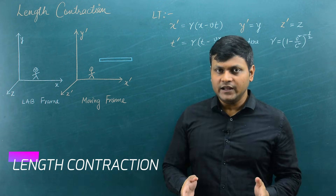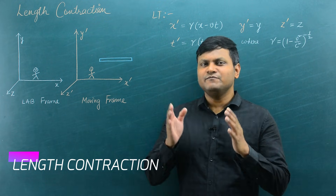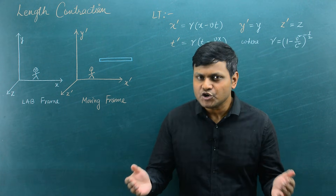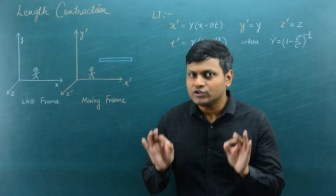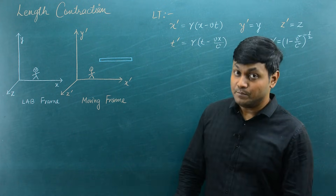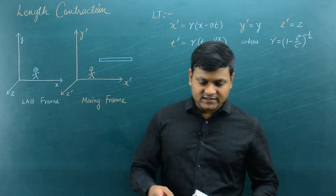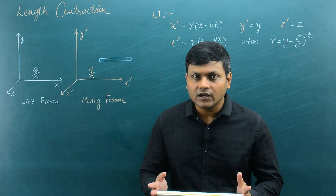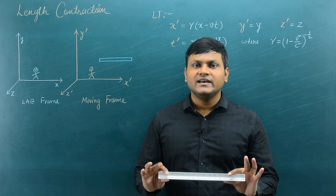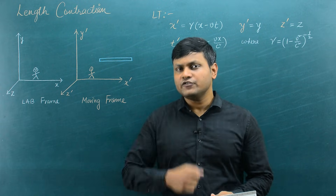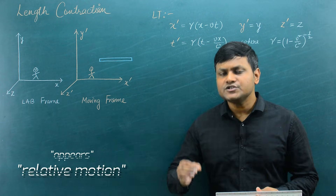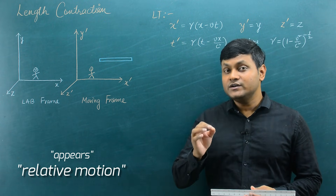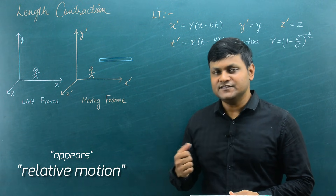Length contraction is quite simply, when two observers are in relative motion, the space-time fabric stretches and distorts in such a manner that the distance between any two points is not necessarily the same. One of the consequences of this kind of phenomena is that whenever we measure the lengths of objects like meter scales or rods or sticks, the measurement of their lengths in the direction of relative motion appears to have contracted with respect to an observer in relative motion. The important words to focus on are 'appears' and 'relative motion.'